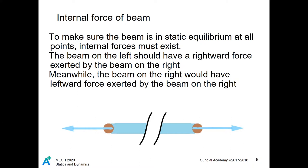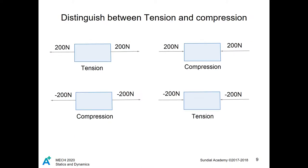If we break the beam into two pieces with only external loading, we see that there is an imbalance of forces. Thus, this situation is rectified with internal forces in equal magnitude and opposite direction to the external forces. Here is a better and more mathematical visualization of tension and compression. Note the signs of the magnitude of each vector when reading this diagram.